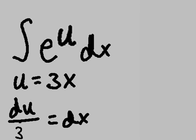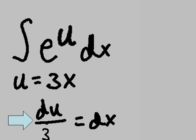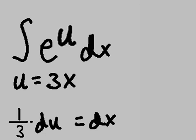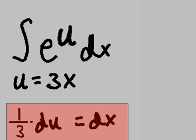Let's make it look nice. And now let's rewrite this. Rather than say du over 3, we can rewrite this as 1 third times du over 1 equals dx. Or 1 third du equals dx. So 1 third du equals dx.